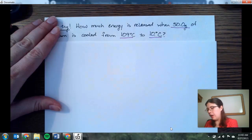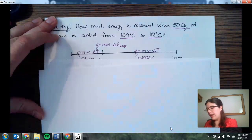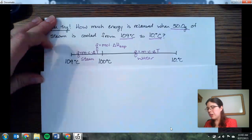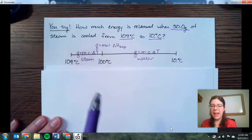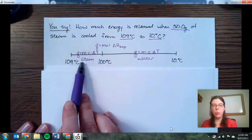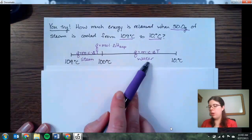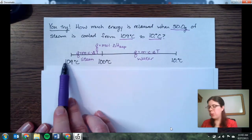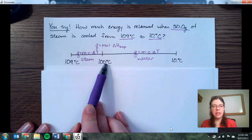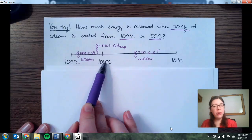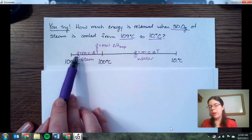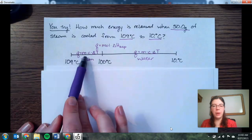Well, hopefully you think to yourself, I know at 100 degrees Celsius we have a phase change and we're going from steam to water. So we start at 109 degrees Celsius, we're going to cool it down until we get to the phase change. When we are cooling or having a change in temperature, we're going to use a Q equals M times C delta T equation.